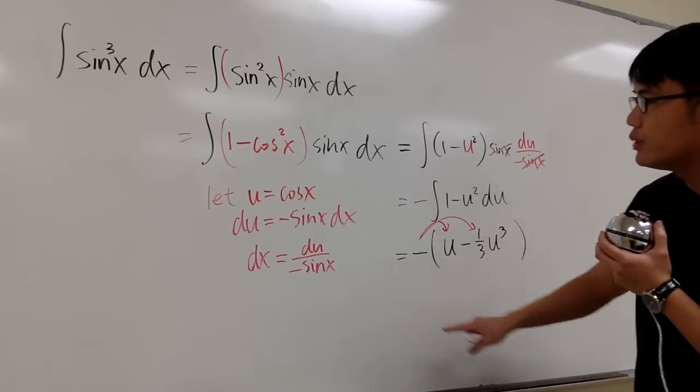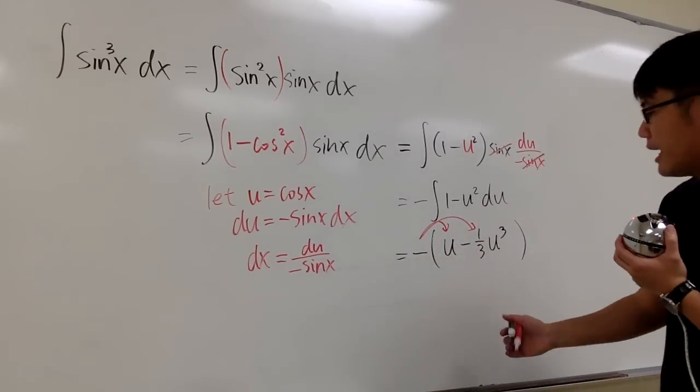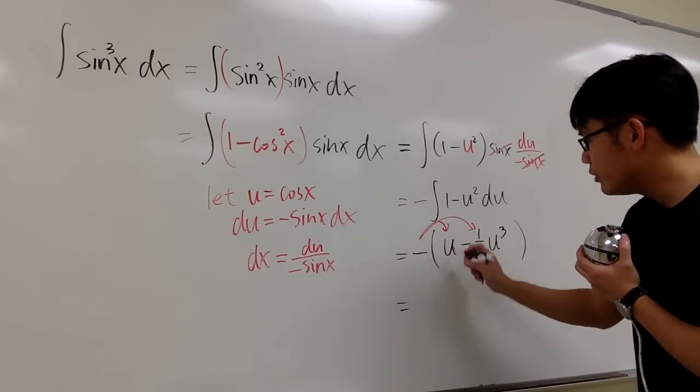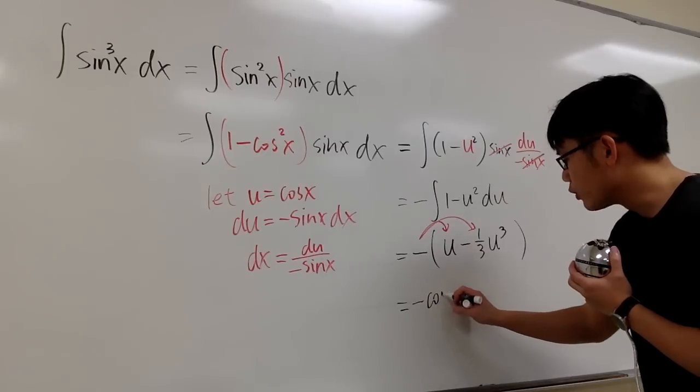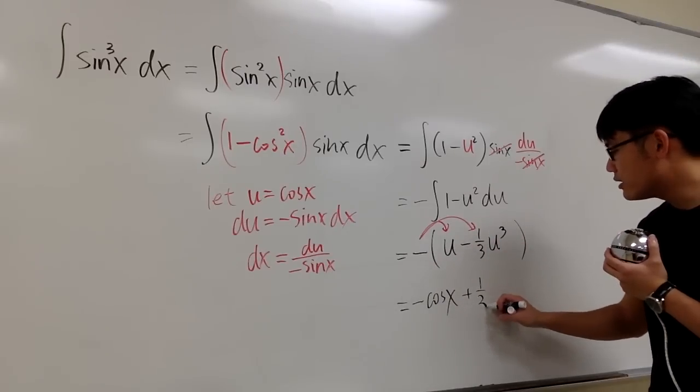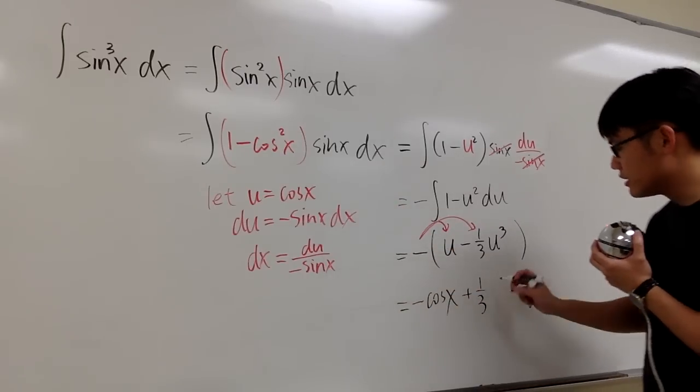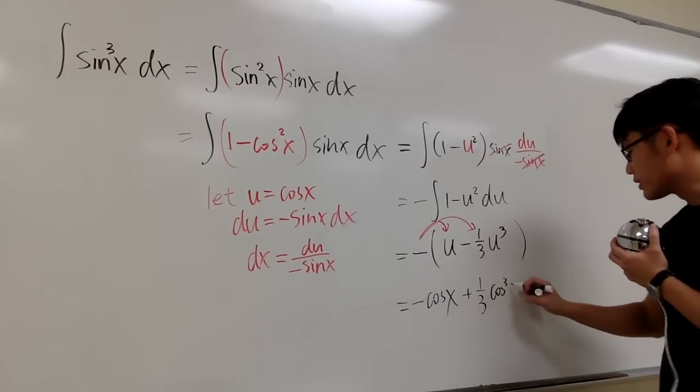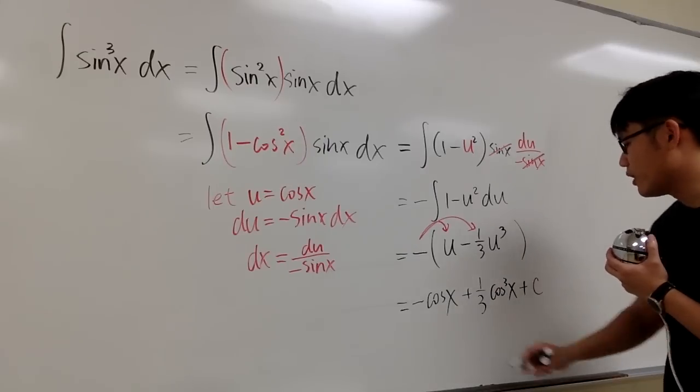And then, I can distribute the negative into the parentheses. In the meantime, u equals cosine x. That means just plugging back. So we have negative u, which becomes negative cosine x, and negative times negative becomes positive, and then we have the one third, u equals cosine x, so just plugging back. Cosine to the third power of x, and then we are done.